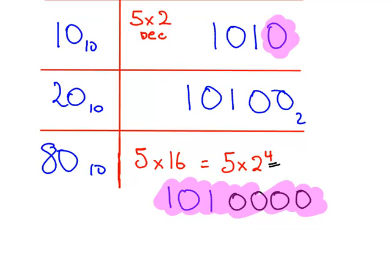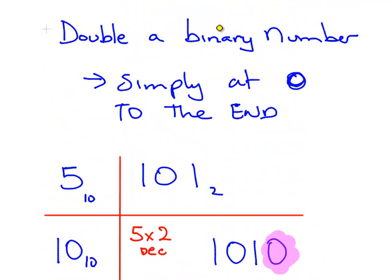Now, that is a very simple idea. Again, to double a binary number, simply put a 0 at the end. Let's just make that clearer. Simply put a 0 at the end.